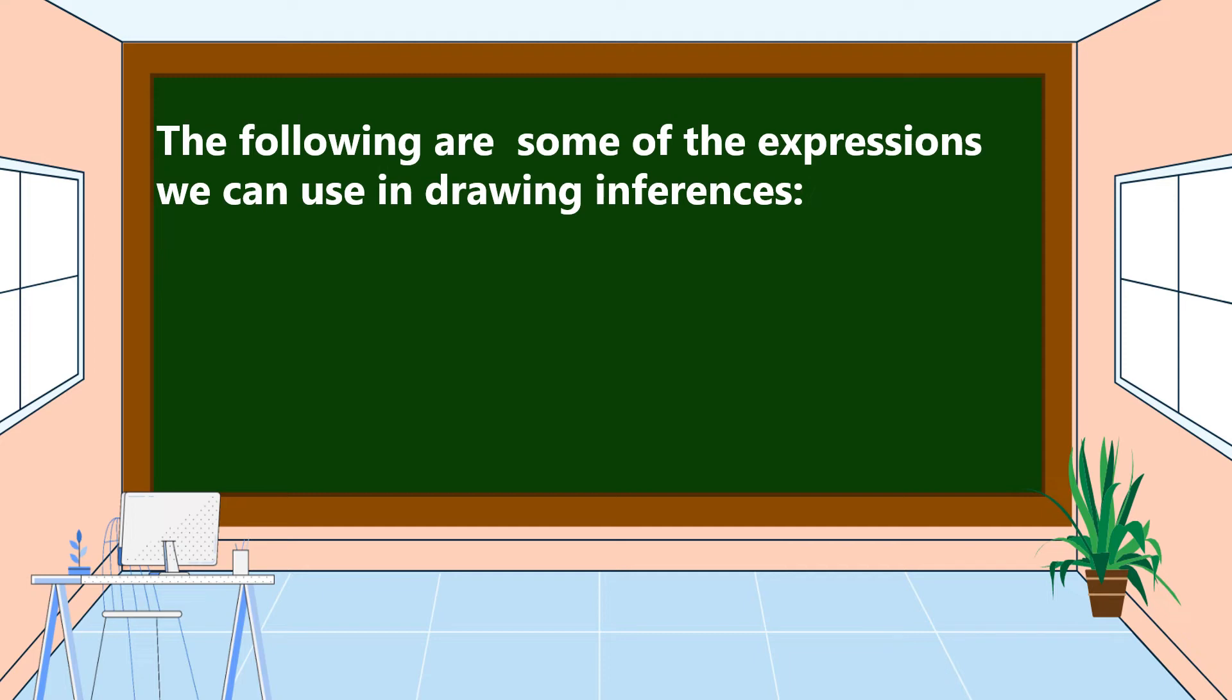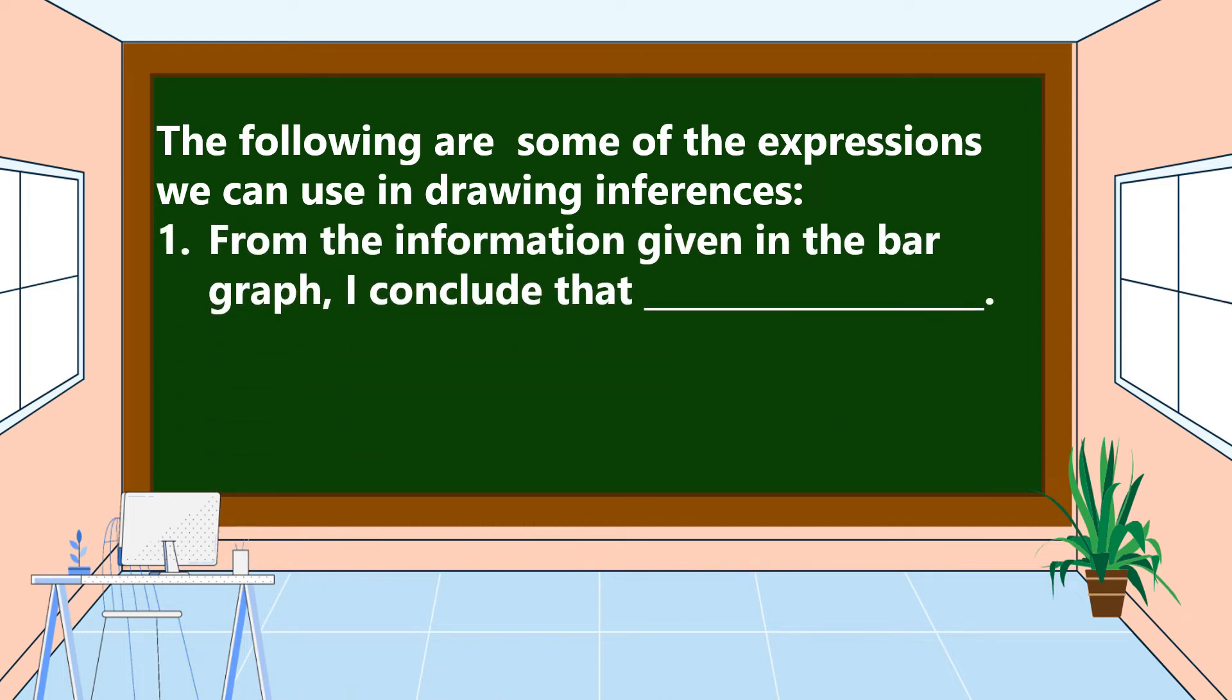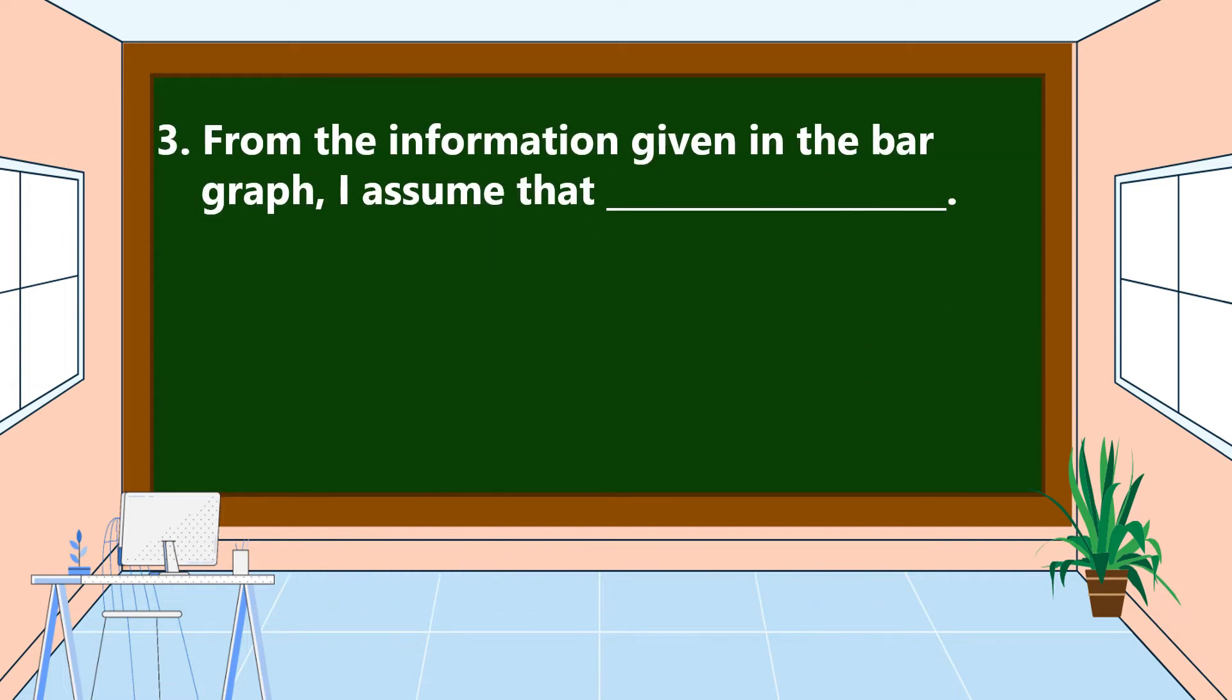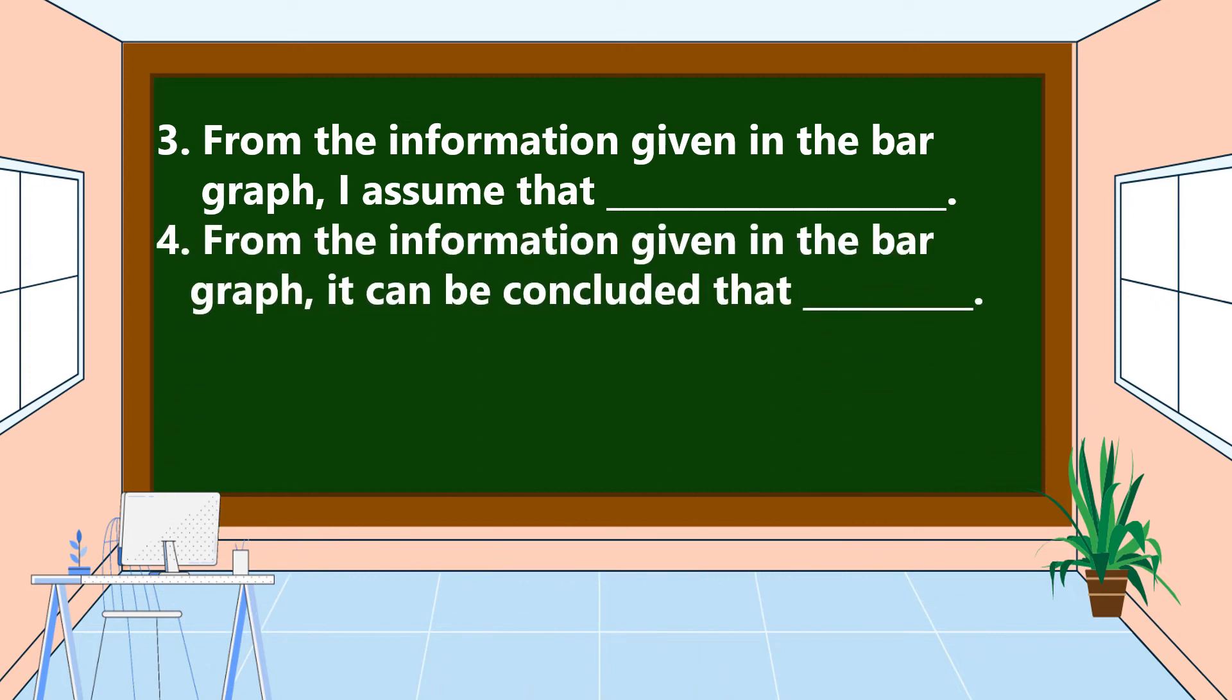The following are some of the expressions we can use in drawing inferences. Number one, from the information given in the bar graph, I conclude that. Number two, from the information given in the bar graph, I infer that. Number three, from the information given in the bar graph, I assume that. Number four, from the information given in the bar graph, it can be concluded that.